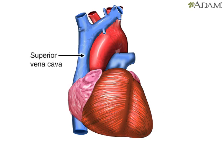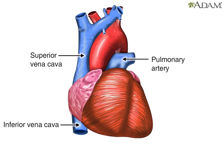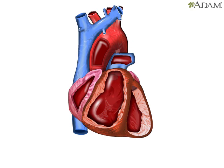The blood vessels include the superior and inferior vena cava — these bring blood from the body to the right atrium. Next is the pulmonary artery that carries blood from the right ventricle to the lungs. The aorta is the body's largest artery; it carries oxygen-rich blood from the left ventricle to the rest of the body.